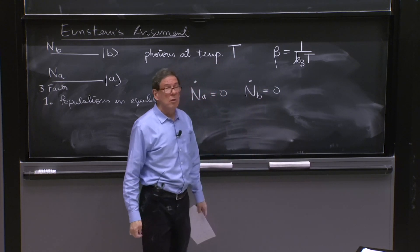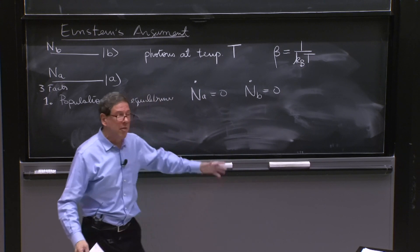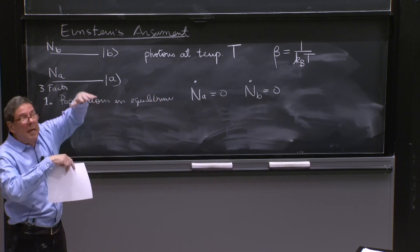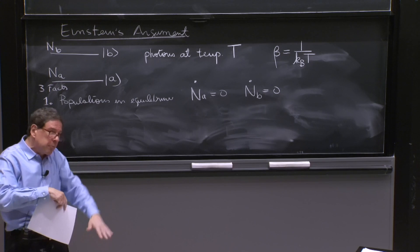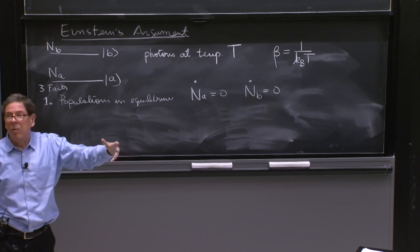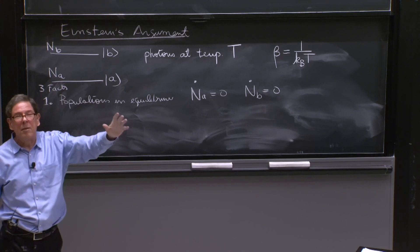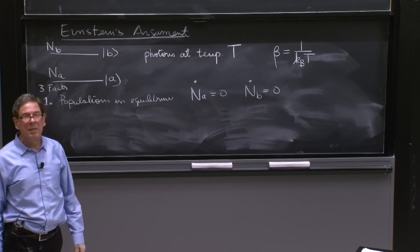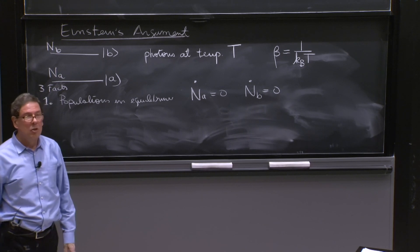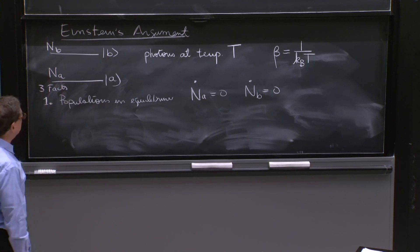They don't stop changing because nothing happens. All the time there will be emission and there will be absorption. But if you reach equilibrium, the number of atoms remain the same on every state. So that's our statement that the populations achieve equilibrium.